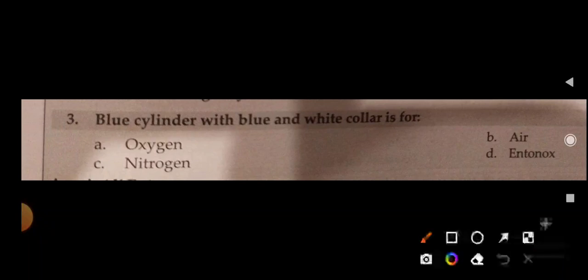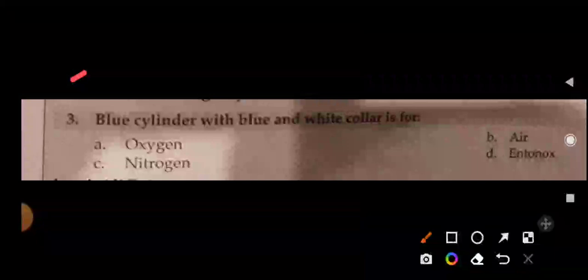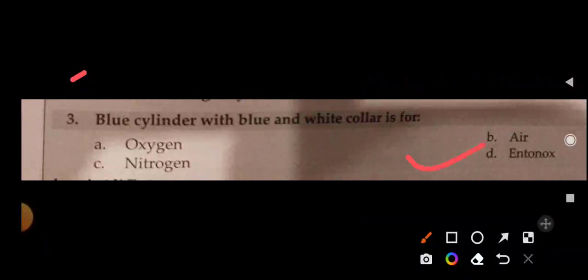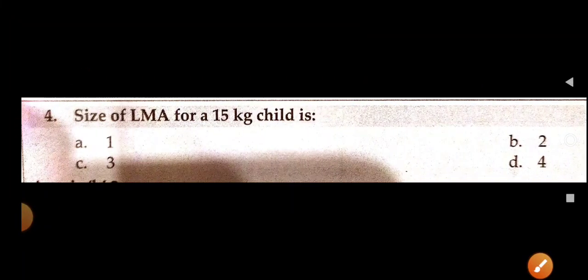A blue cylinder with blue and white collar — what gas is it? Options: oxygen, air, nitrogen, or nitrous oxide. For oxygen, the cylinder is black body with white shoulder. The answer here is nitrous oxide — blue and white collar is for nitrous oxide. Blue color cylinder is for nitrogen. Nitrous oxide can also cause vitamin B12 deficiency.